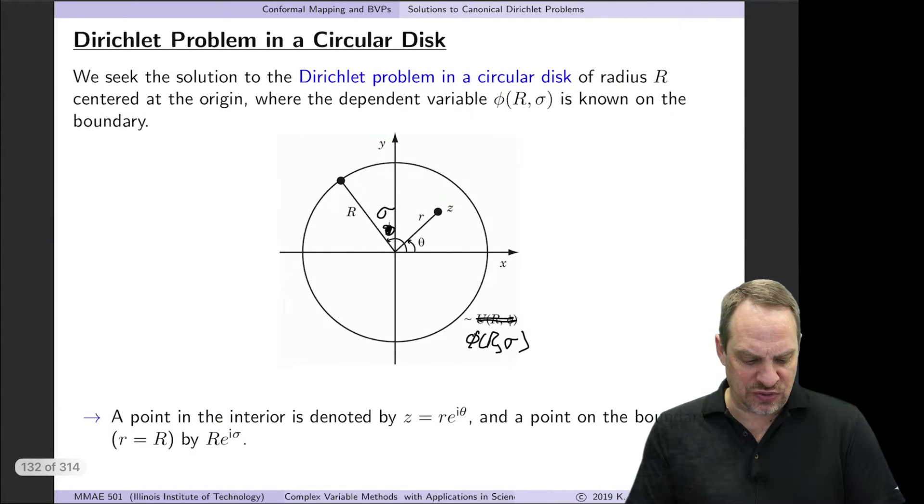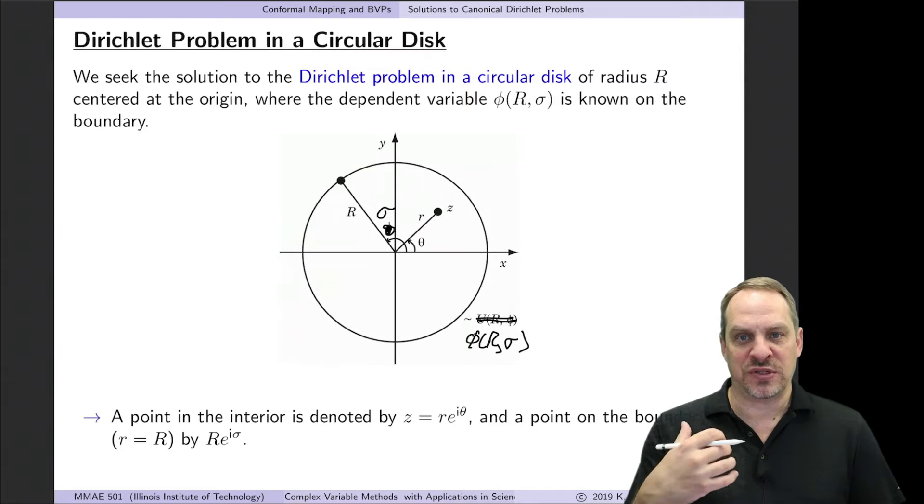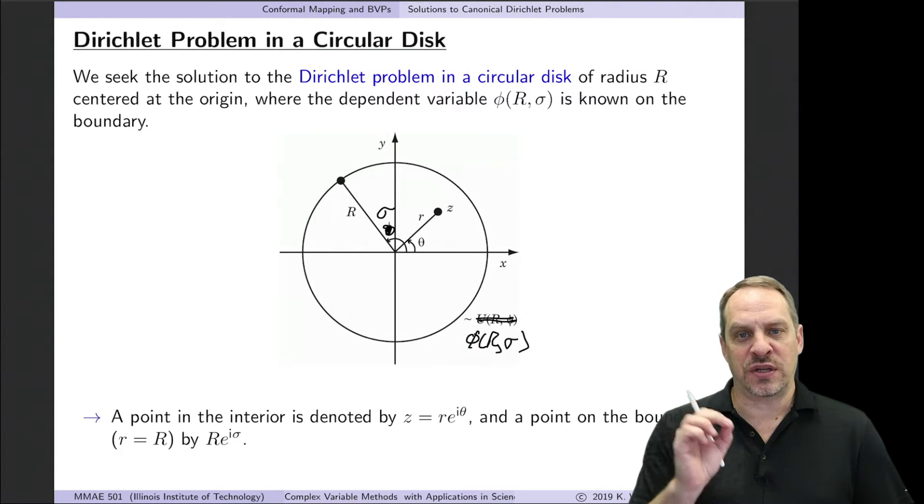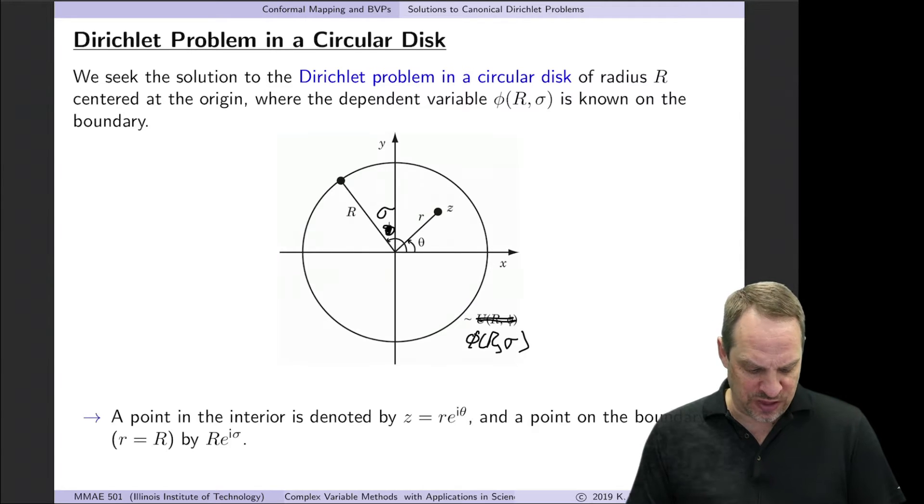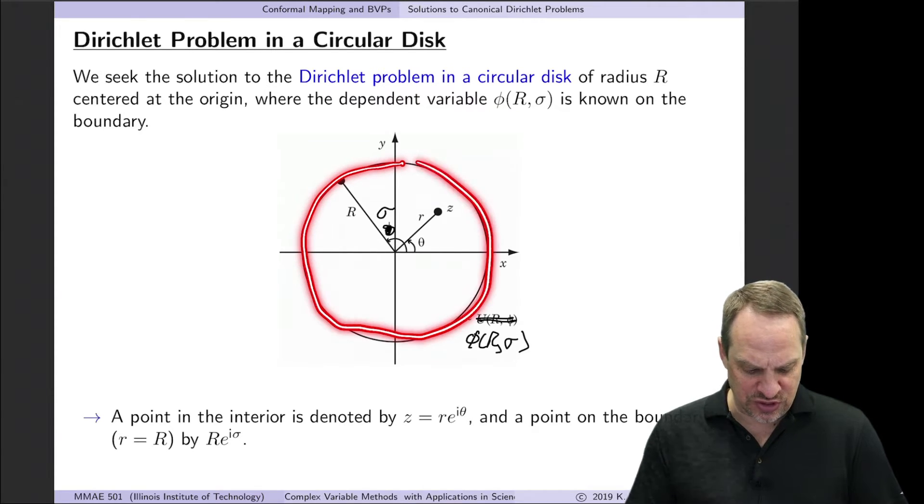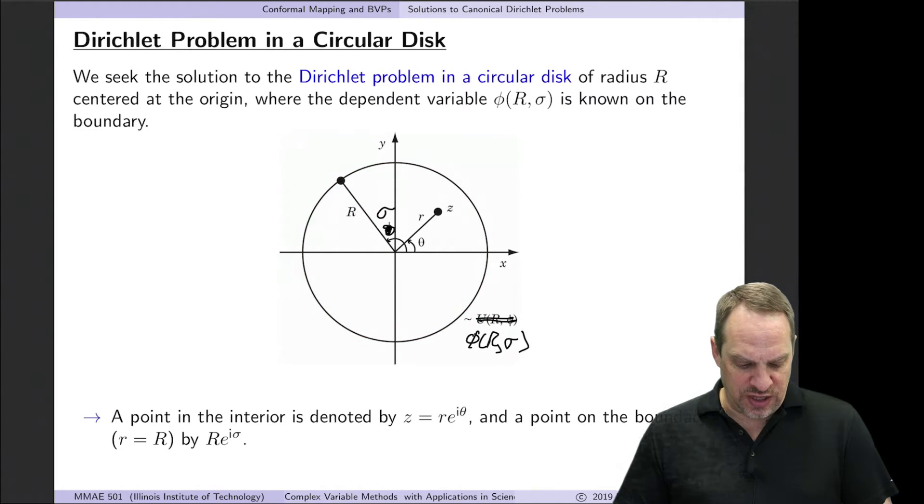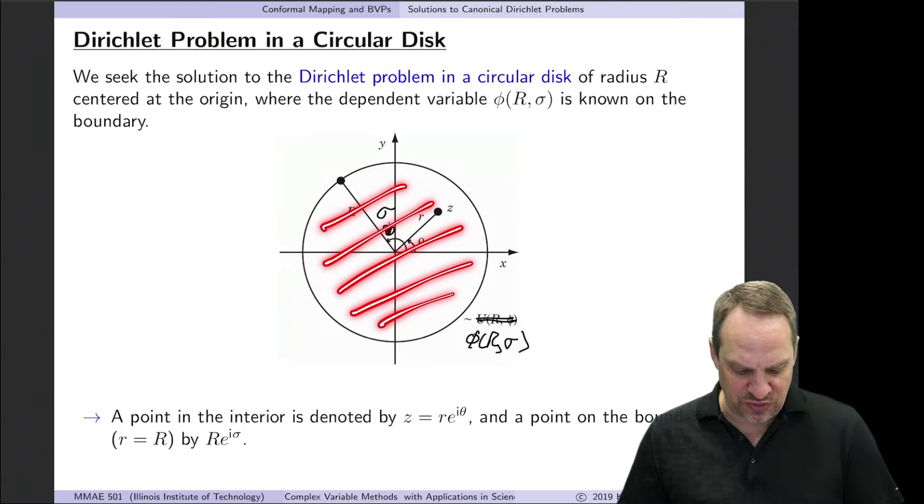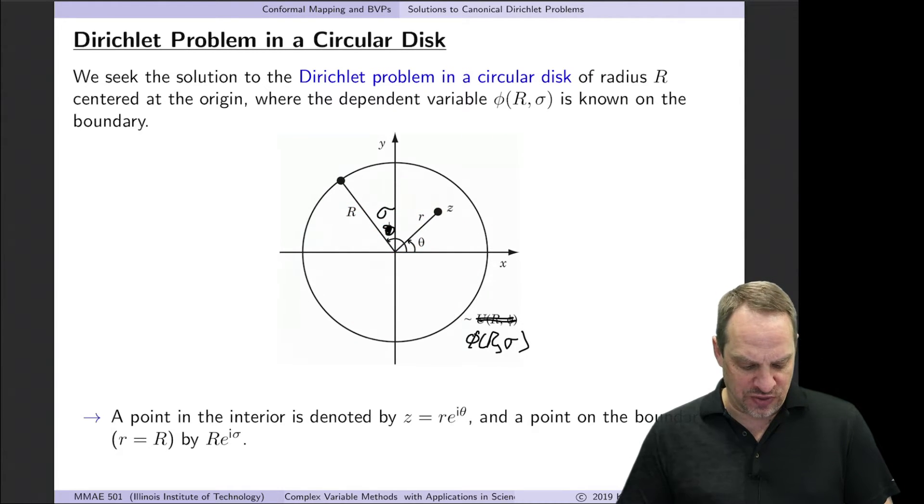We're going to consider the Dirichlet problem in a circular disk. The Dirichlet problem is governed by Laplace's equation with fixed values of the dependent variable around the entire boundary. Here we're going to have a circle centered at the origin of radius R, and we want to determine, given boundary conditions at every point on that circular disk, what is the value of the dependent variable phi of little r theta throughout that entire domain. The r theta is a generic point in the interior of the domain, and capital R sigma will be values of phi on the boundary.